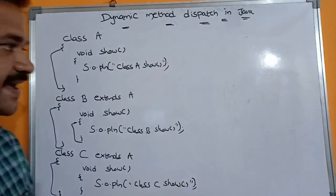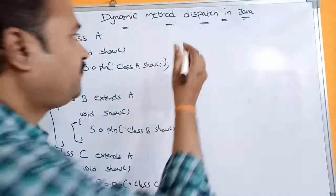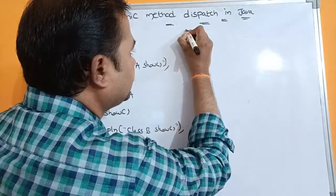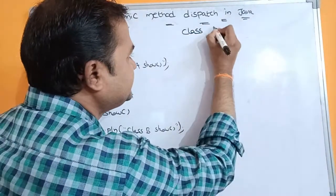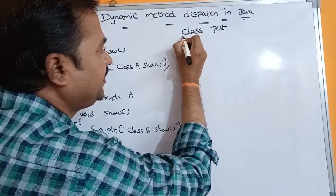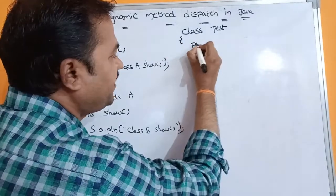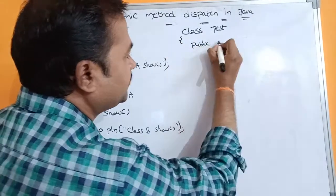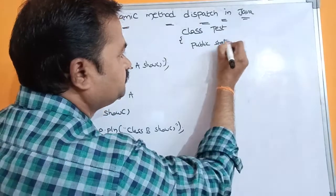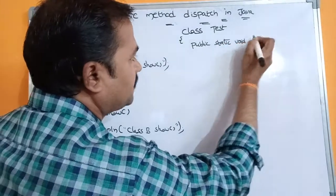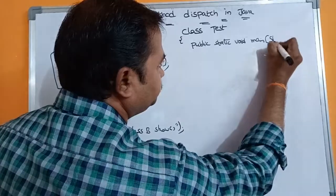Next we have to define the main method. For that we declare a class named Test. Inside the Test class we define the main method: public static void main(String[] args).